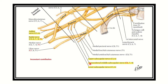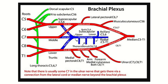So the posterior cord gives upper subscapular, lower subscapular, thoracodorsal nerve, and then the two terminal branches: the axillary nerve and the radial nerve. These five are all branches from the posterior cord of the brachial plexus.